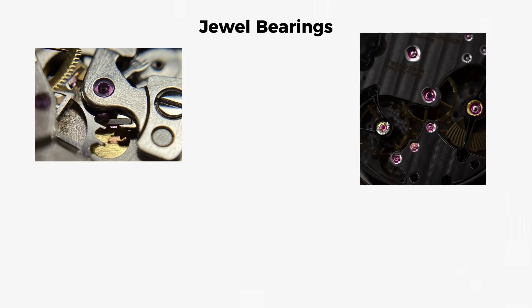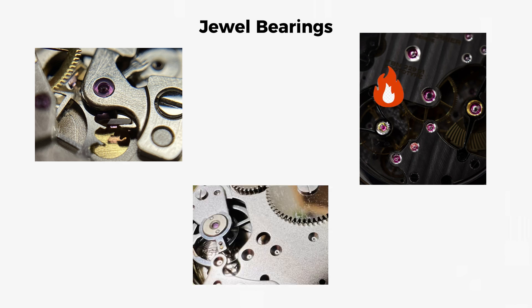The reason for using jewels is simple: friction. Metal pivots spinning inside metal holes create heat, wear, and inconsistent resistance that destroys accuracy and eventually grinds the mechanism to a halt.